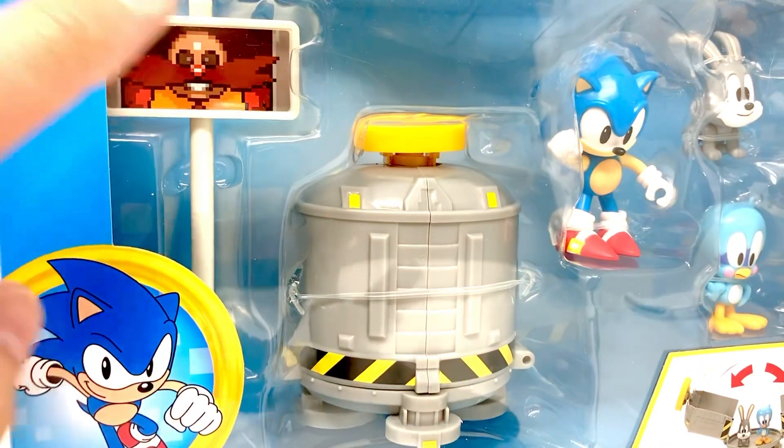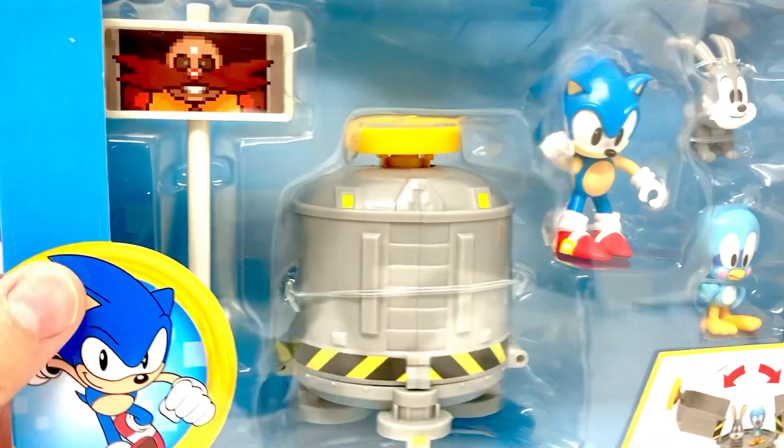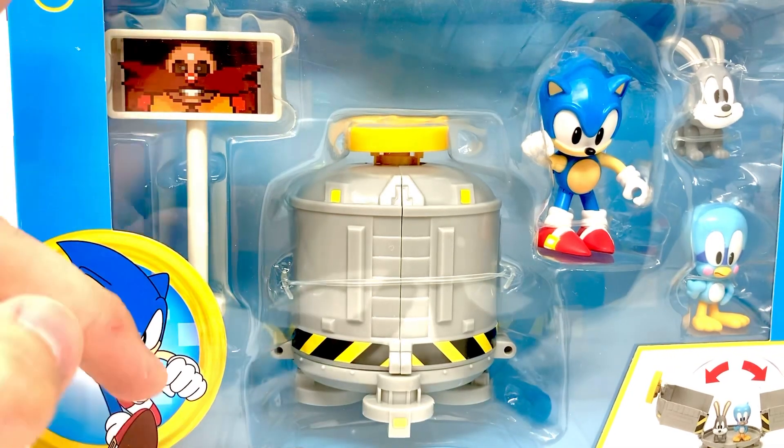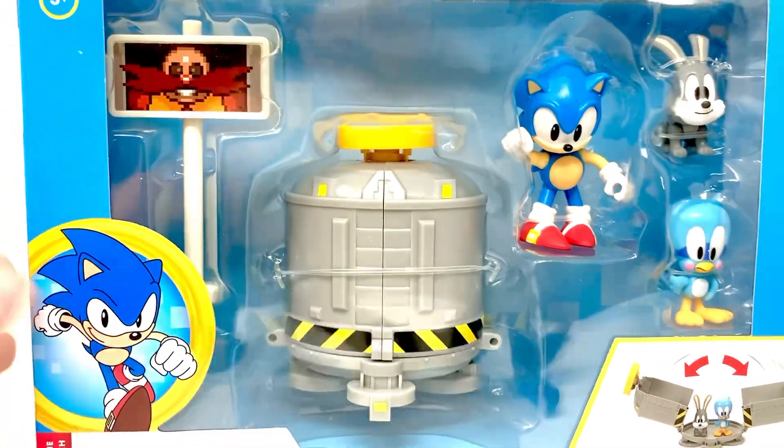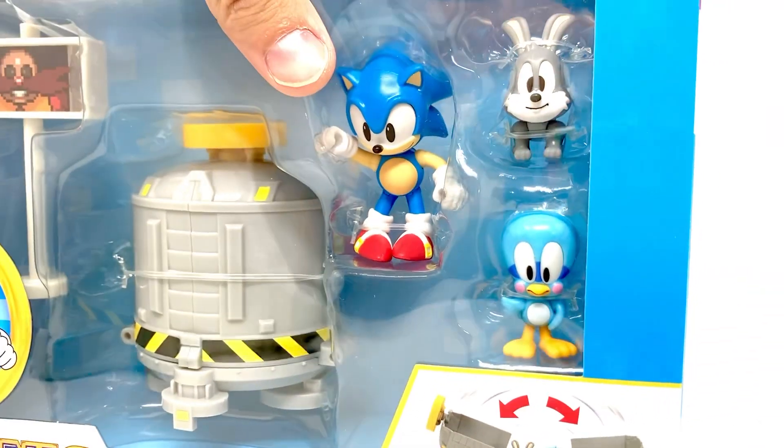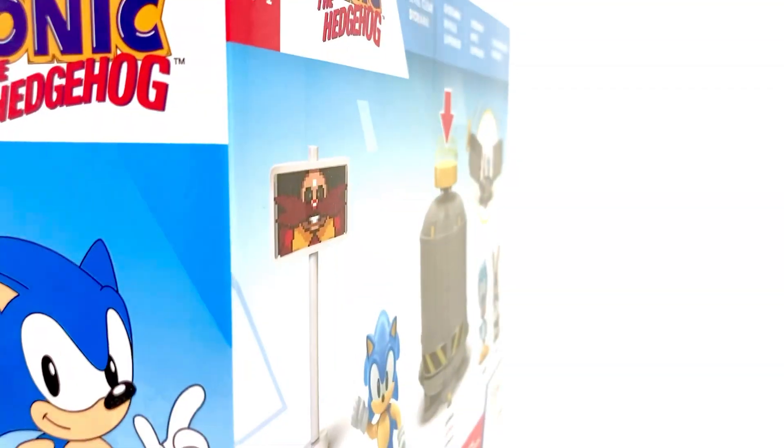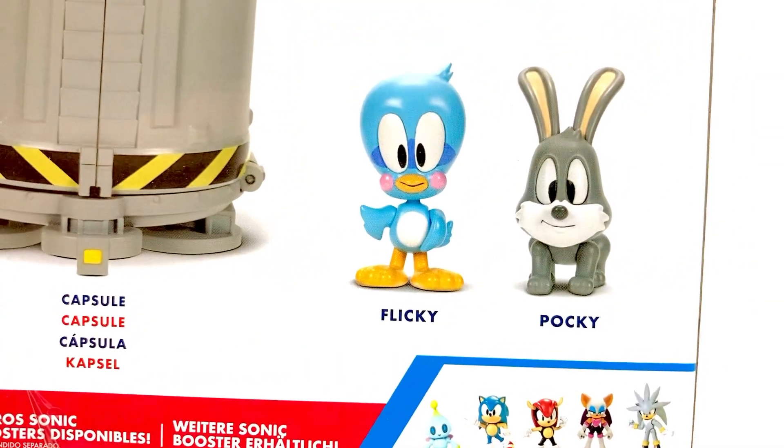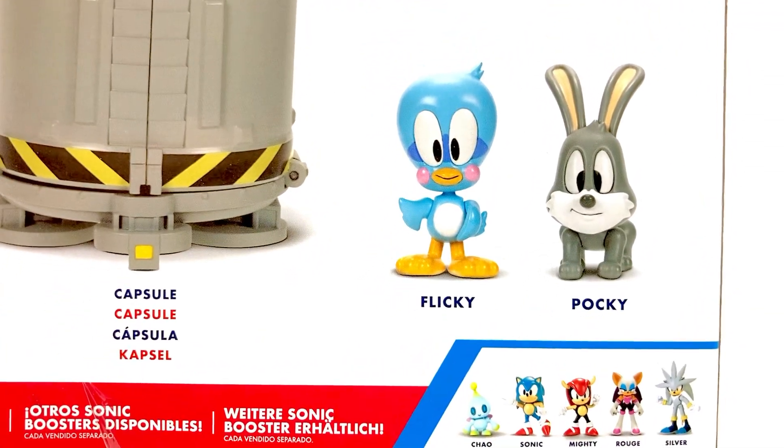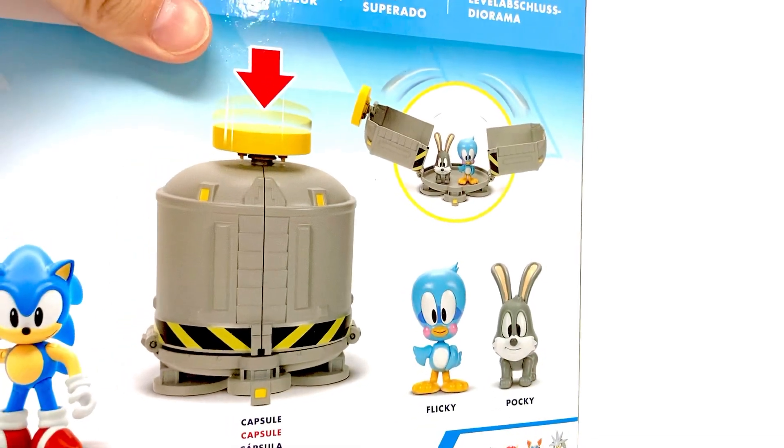And it comes with a little spinning end piece with Robotnik on this side and the other side has Sonic on it. And we get a little bunny and a little birdie, and their names are Flicky and Pocky. They are very cute. Can't wait to check this out.